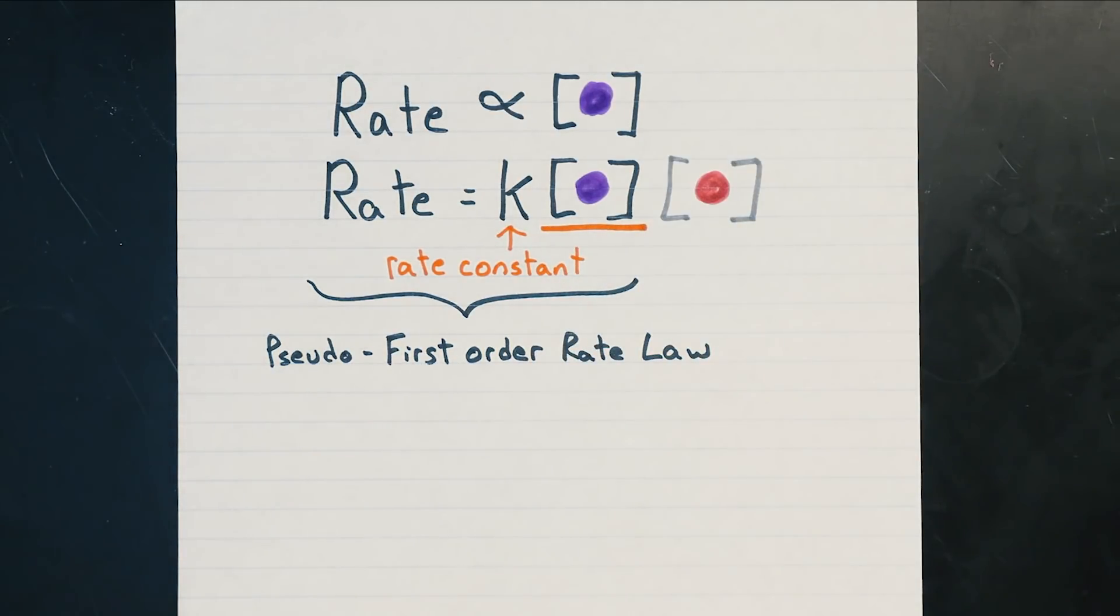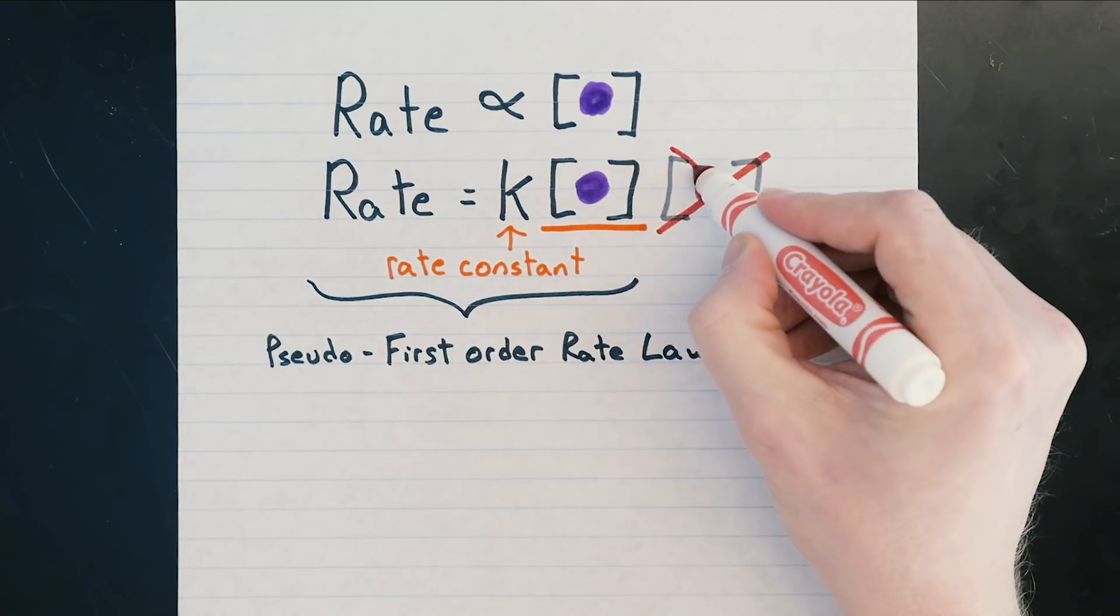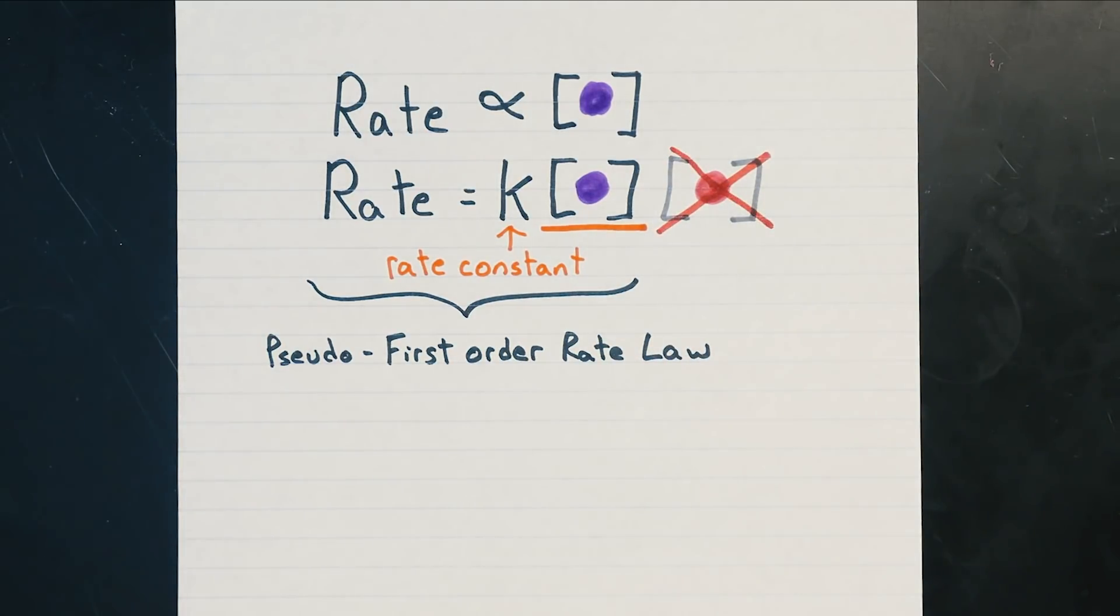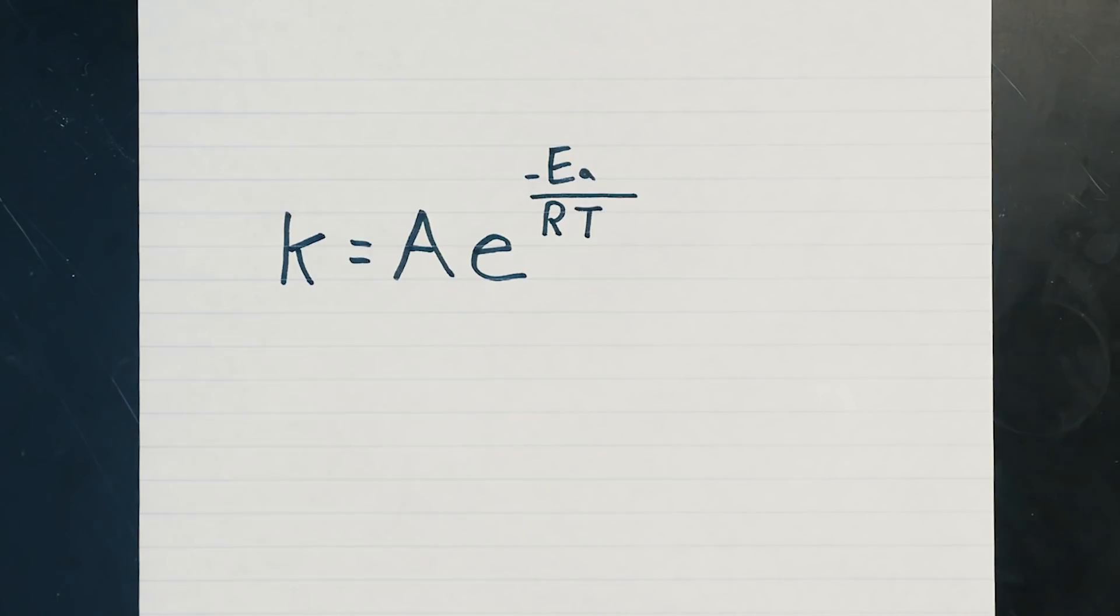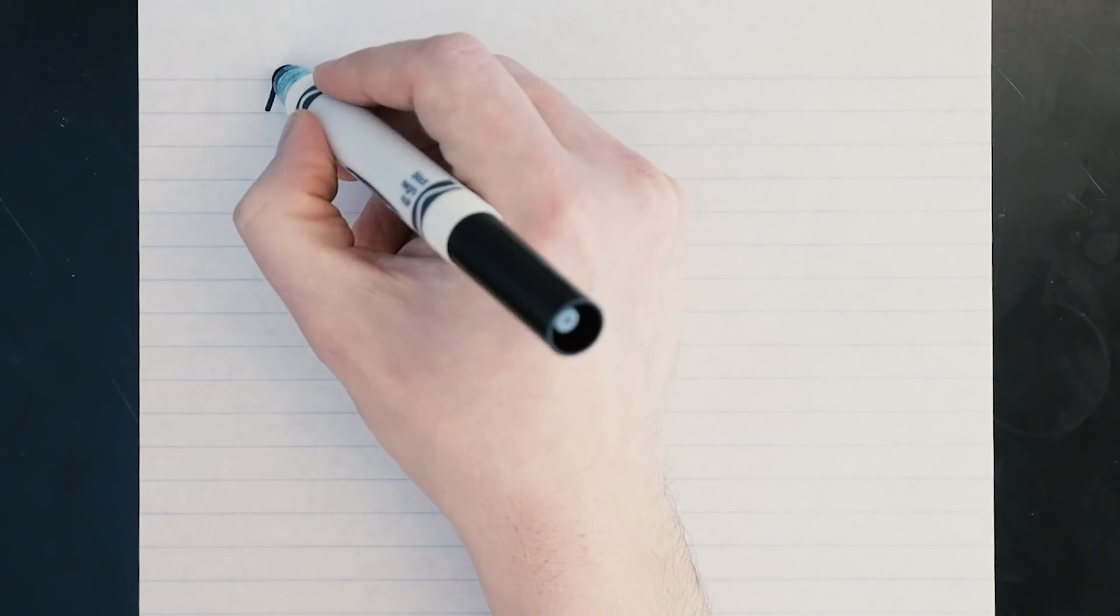Pseudo because we're ignoring the fact that other reactants are present in excess. The rate constant is an intrinsic measure of how fast a chemical reaction actually is, and it turns out that it can be directly related to the activation energy.